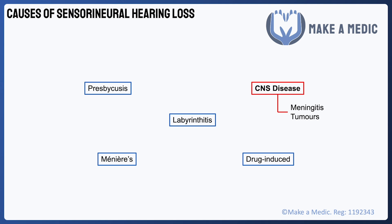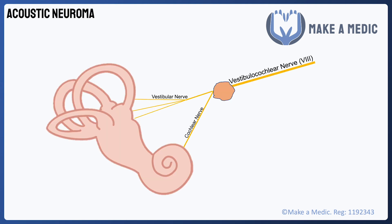Central causes of sensorineural hearing loss include meningitis, which is why a hearing screen is usually part of the follow-up process, especially in children. A range of brain tumours may affect the CNS as well, but a specific example to be aware of is acoustic neuroma, otherwise known as vestibular schwannoma. These are benign tumours that develop on the vestibulocochlear nerve after arising from the Schwann cells, which are normally responsible for producing the myelin sheath. Since this nerve carries hearing and balance information, the symptoms will include hearing loss as well as vertigo in the affected ear.